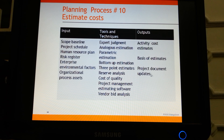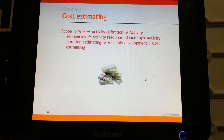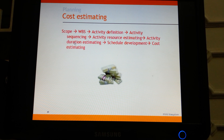When we do the cost estimate, sometimes we may have to go back and update the charter or the plan based on the costs we are getting, so any document can get updated at any time. The sequence was: define scope, decompose into WBS, decompose further into activities, sequence those activities based on dependencies, then move into activity resource estimation.